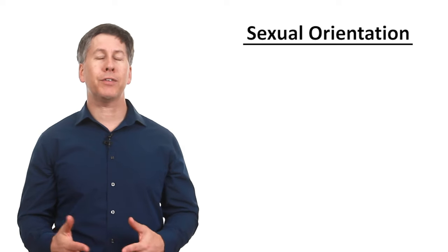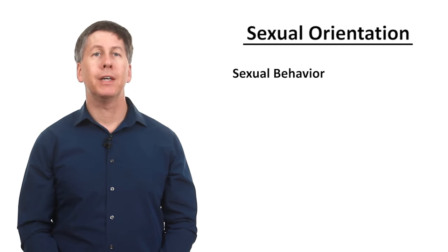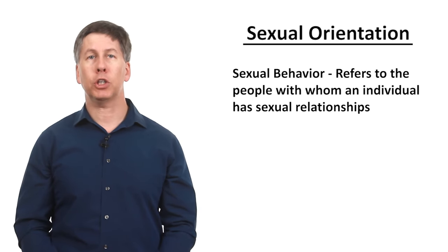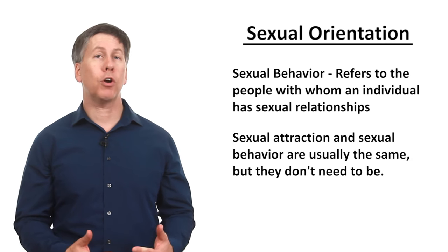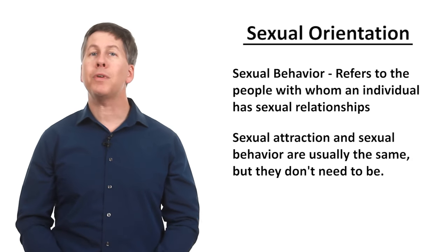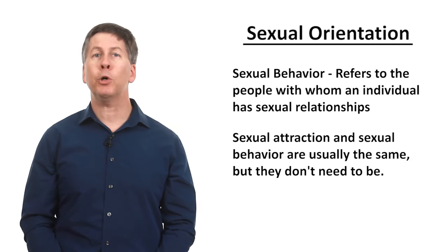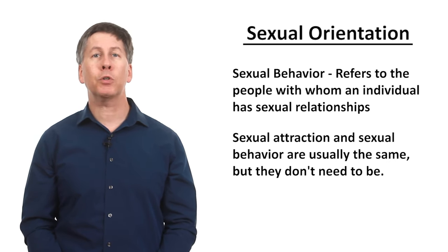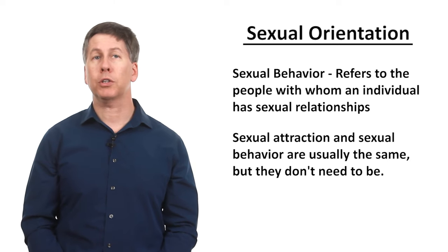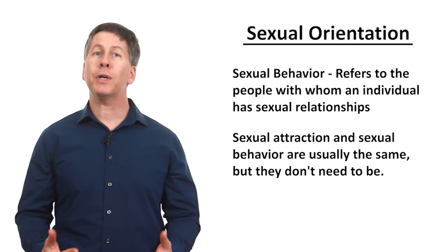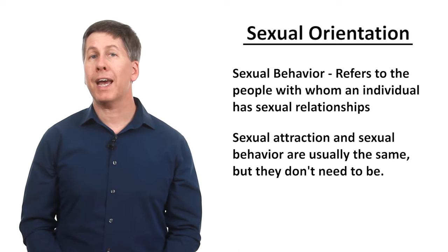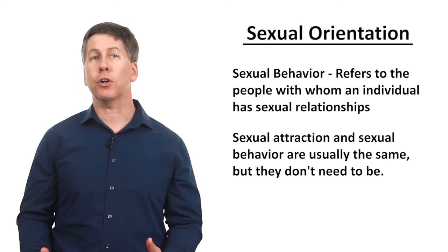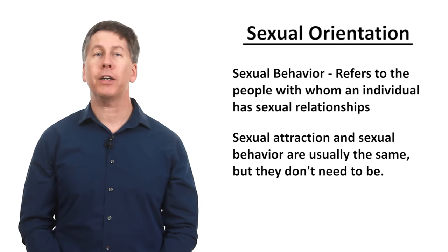Another characteristic within sexual orientation is sexual behavior. Sexual behavior refers to the people with whom an individual actually has sexual relationships. While sexual attraction and behavior are usually the same, they don't need to be. For example, a person might be attracted to people of multiple sexes, yet be sexually active with only members of one sex due to societal or religious pressures. Another example might be a Catholic nun who could be straight or gay based on sexual attraction, while her sexual behavior is celibate because she is not acting on that attraction.